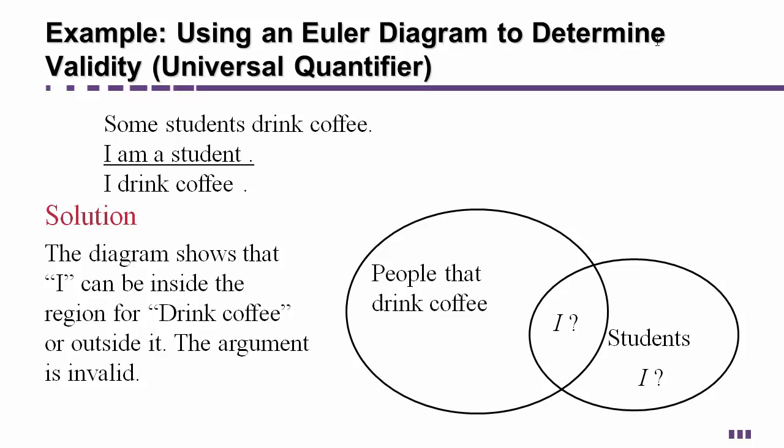Those are Euler diagrams. That is all we are going to do to determine if things are valid or not.